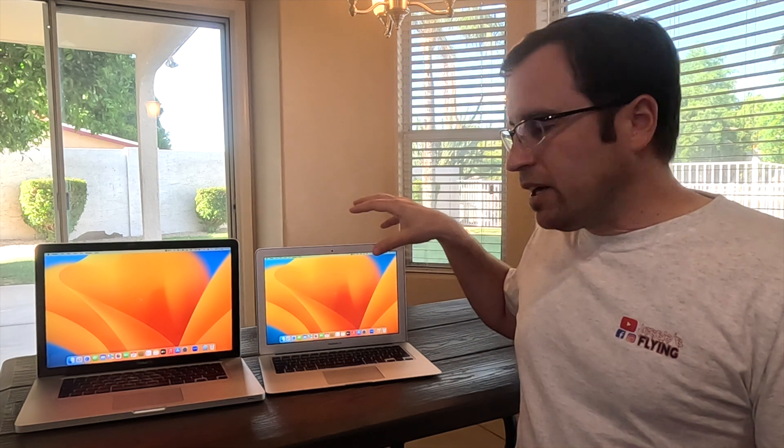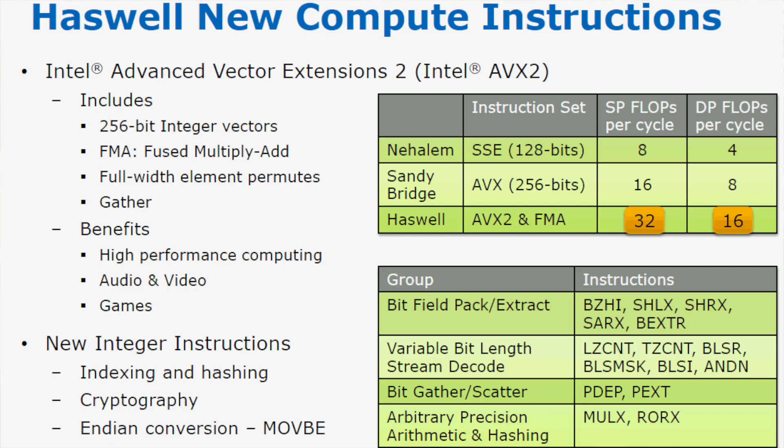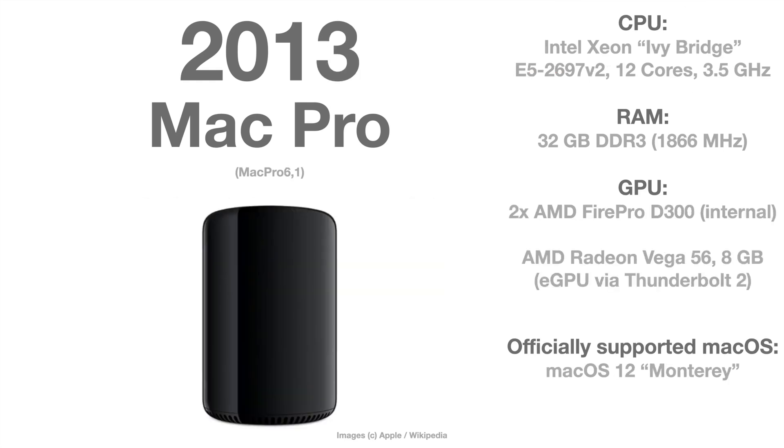The Intel Haswell CPU generation came with AVX2 — a code set required by macOS Ventura. The developers of OpenCore had to find a way to enable Ventura on pre-Haswell Macs. The MacBook Pro 2012 is a pre-Haswell machine, and the Mac Pro 2013, even though it's from 2013, has a Xeon CPU that is also pre-Haswell. That is the root cause of a lot of troubles with the Mac Pro 2012 and 2013 that you can find in my other videos on the channel.